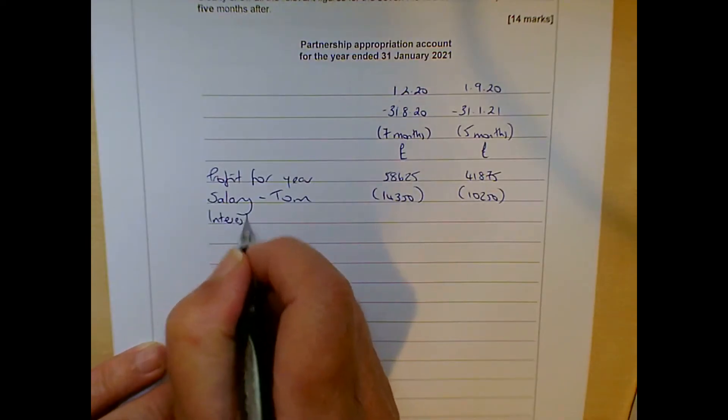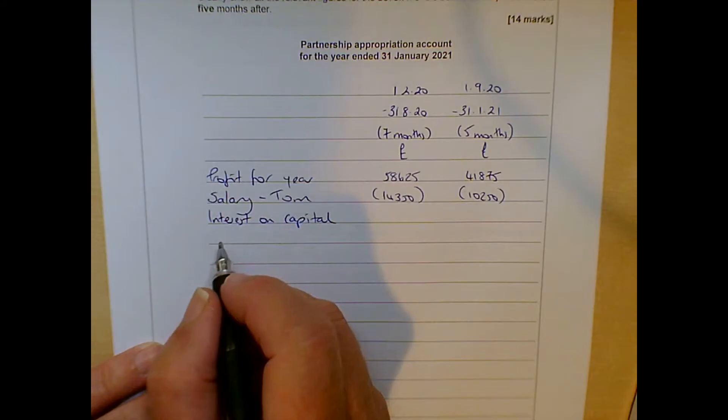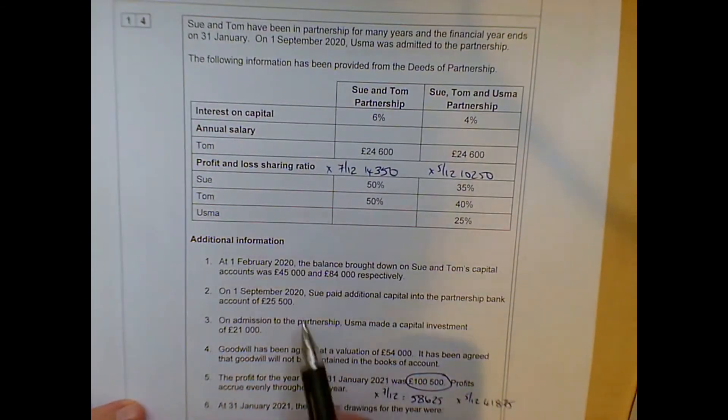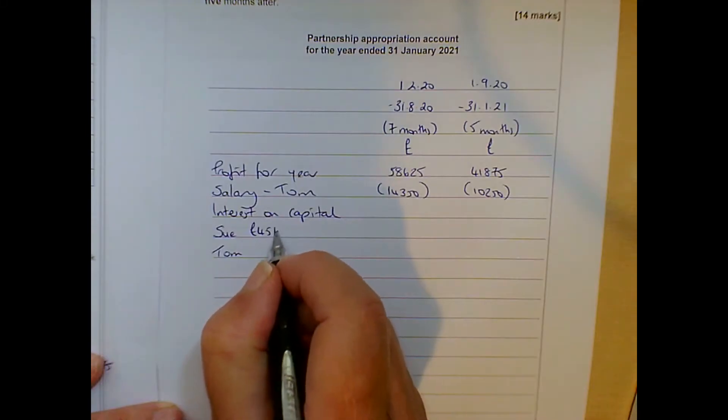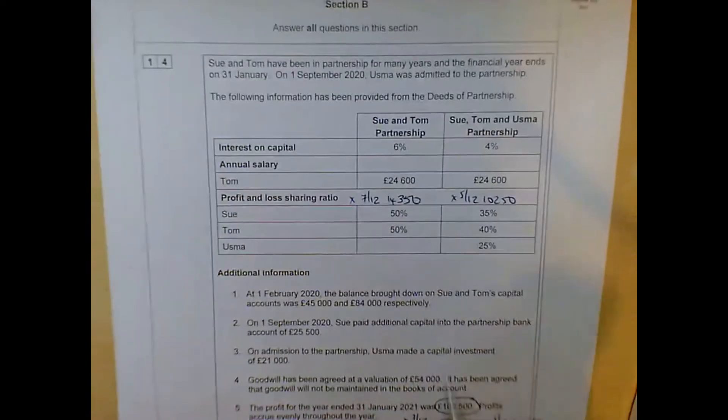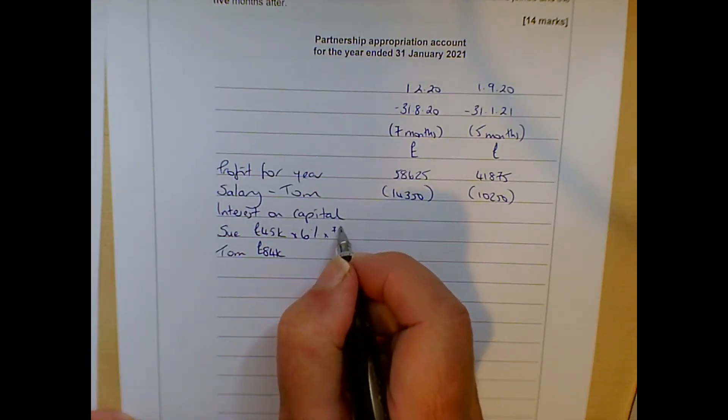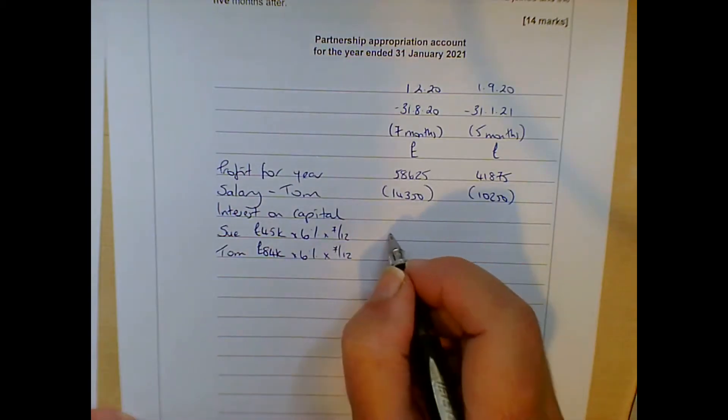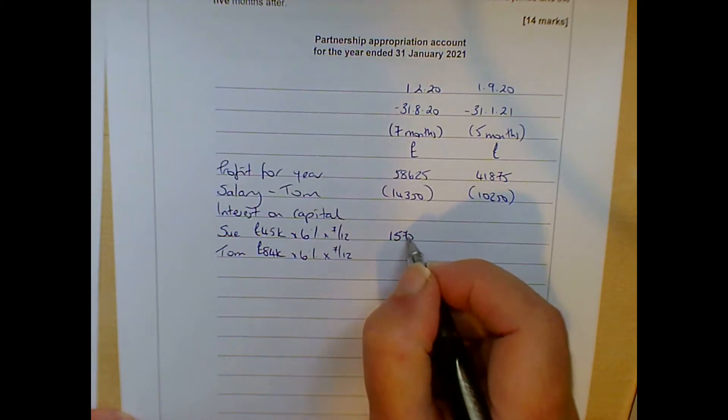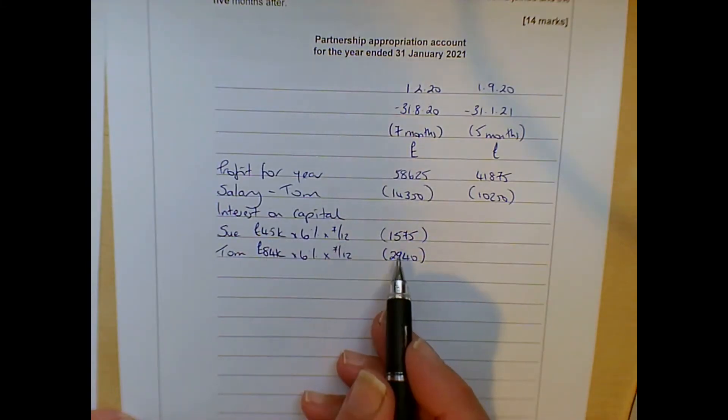Next thing we've got to do is sort out the interest on capital. Now this is going to be quite easy for the first period of time. So Sue and Tom, for the first period. Now let's have a look. Their balance is brought forward. Sue had £45,000 and Tom had £84,000. So £45,000 and £84,000 and the interest that they're getting for the first seven-month period is 6%. So it's times 6% and then we've got to remember to time apportion it. Times 7 over 12. Same for Tom, 6% times 7 over 12. So for that first period of time, Sue is going to be getting £1,575 and Tom is going to be getting £2,940.